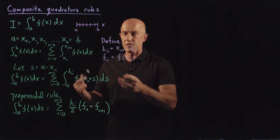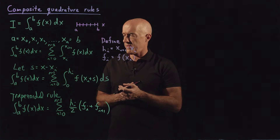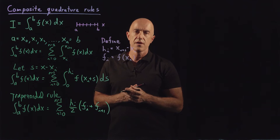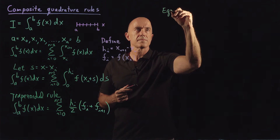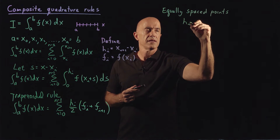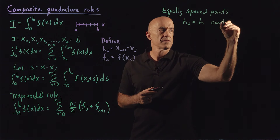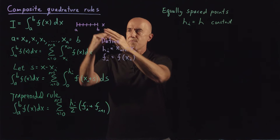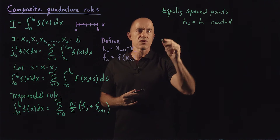On the other hand, if you can compute the function at any points, then you would want to use equally spaced points. For equally spaced points, hᵢ equals h, a constant. Depending on how many points you choose, the more points you choose, the smaller the value of h.